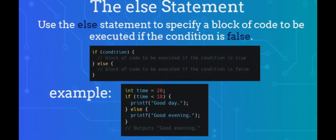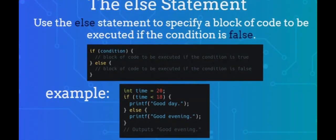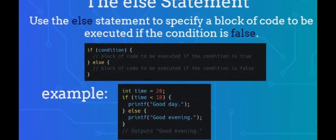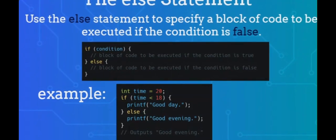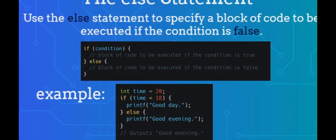The else statement. Use the else statement to specify a block of code to be executed if the condition is false. Here we open two braces, one for the if statement and another for the else statement. In this example, time 20 is greater than 18, so the condition is false. Because of this, we move on to the else condition and print to the screen "good evening". If the time was less than 18, the program would print "good day".